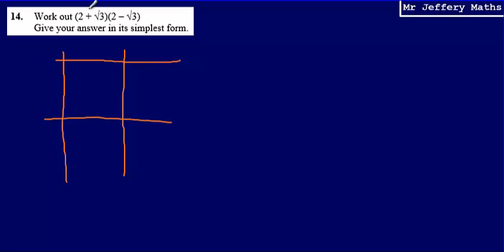Just remembering that this essentially means 2 plus root 3 multiplied by 2 minus root 3, so I'm going to multiply these two expressions together.